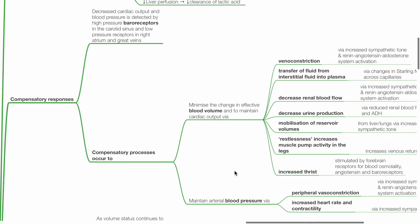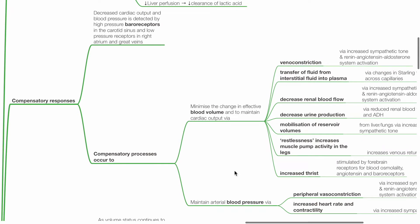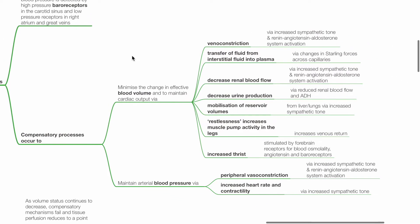Compensatory responses: Decreased cardiac output and blood pressure is detected by high pressure baroreceptors in the carotid sinus and low pressure receptors in the right atrium and great veins. Compensatory processes occur to minimize change in effective blood volume and to maintain cardiac output and arterial blood pressure.